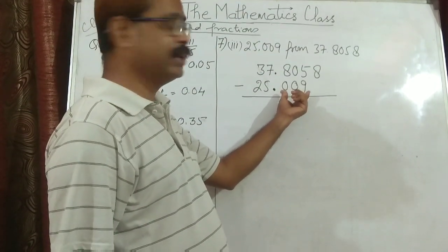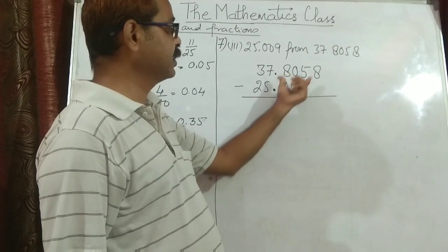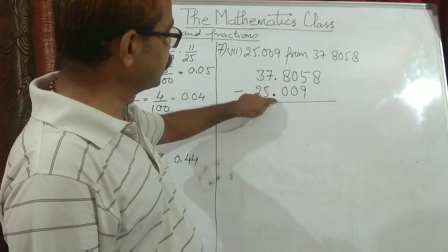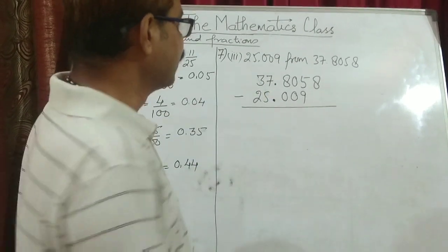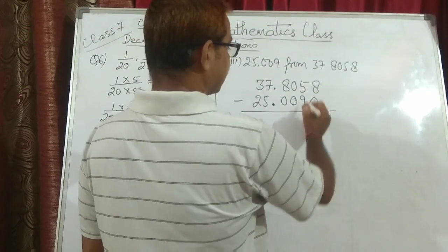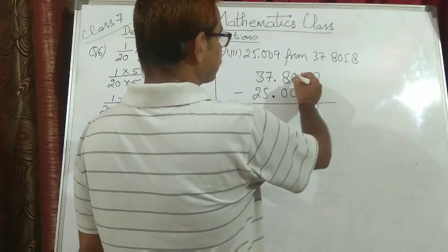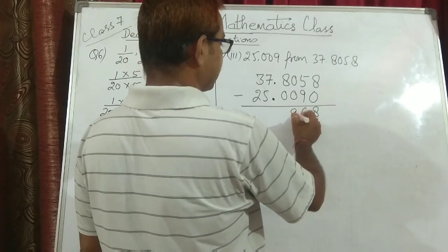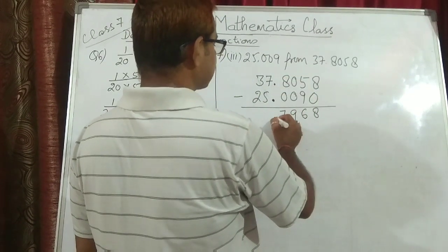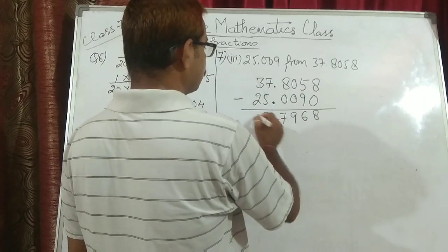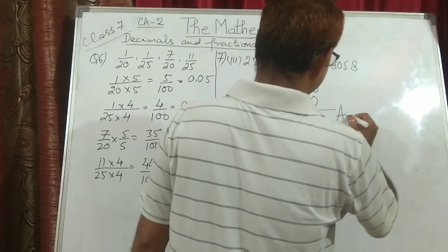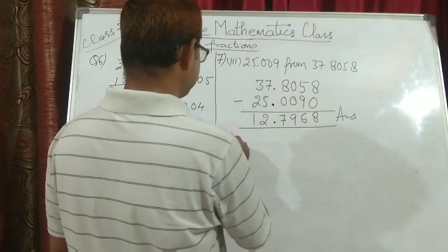Irrespective of how many digits are after the decimal — here there are 3 digits and here there are 4 digits — it doesn't matter. The decimal points must be below each other. Where nothing is there, we assume it is 0. So 8 minus 0 is 8; 5 minus 9 requires borrowing; 9 minus 0 is 9; and 7 minus 5 is 2. Put the decimal and this is the final answer. Now I am doing the 4th part.